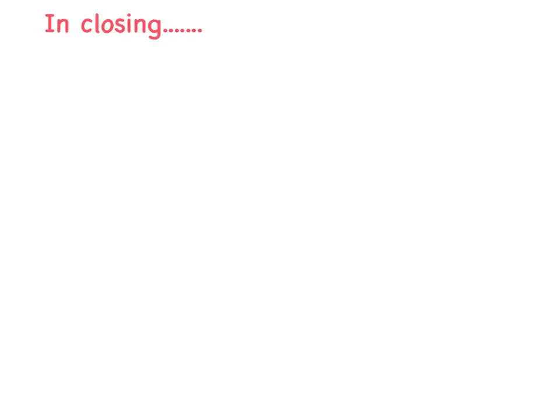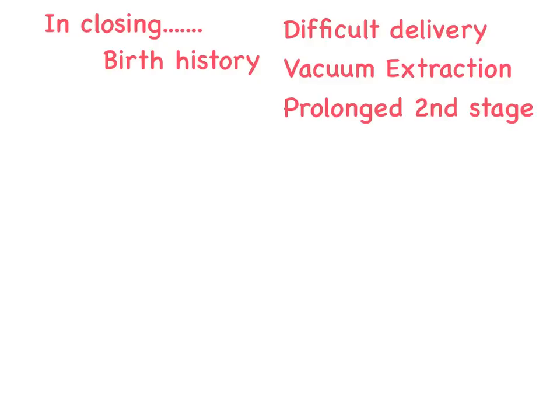In closing, when you see a neonate with a scalp hematoma, you need to get a good birth history — specifically whether this was a difficult delivery, a vacuum extraction, or a prolonged second stage of labor. It is important to know when the hematoma was first noted. If it was noted at birth and is getting smaller, it is probably a caput succidaneum. If it was noted at birth and is getting larger, it is probably a subgaleal hematoma. If it was not present at birth and is now noted at 2 or 3 days of life, it is probably a cephalohematoma.